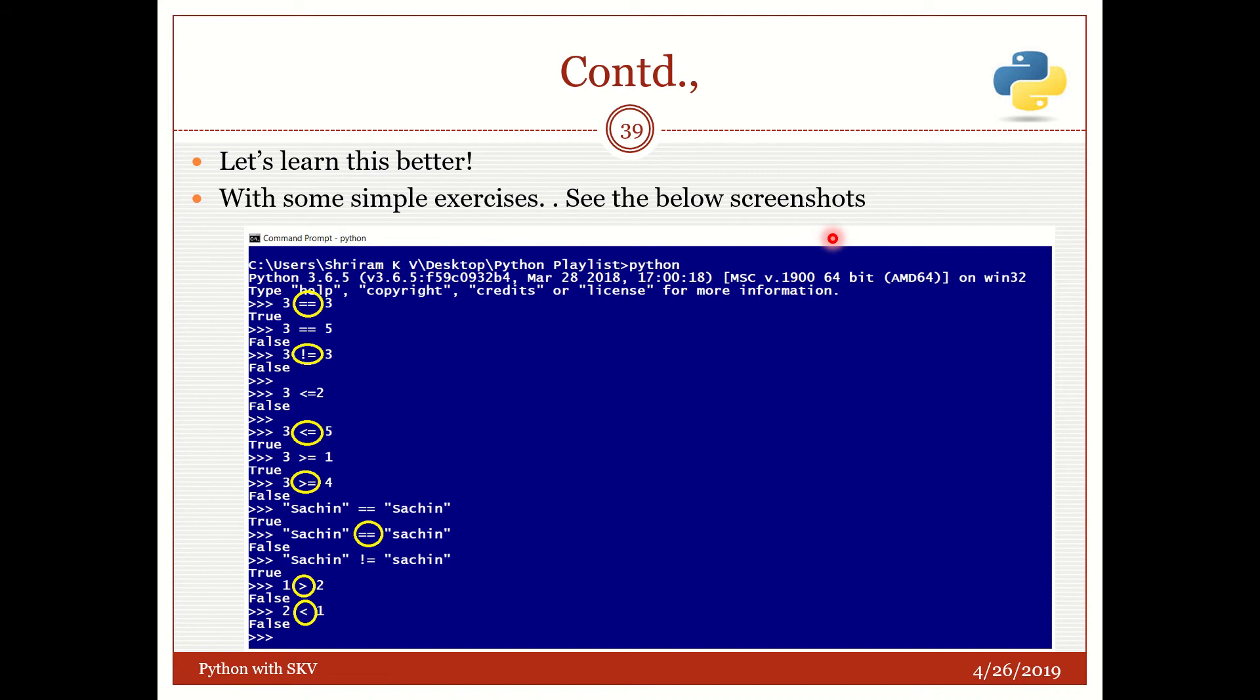Right, let's also understand some other examples which are closely related to this type. Now see, 3 equal to equal to 3, is it true? Yes, true. So the reply is True and this is Boolean. 3 equal to equal to 5, is it correct? No, it is False. So I got a False. 3 not equal to 3, is it true? No, it is False. I got a False. 3 less than or equal to 5.